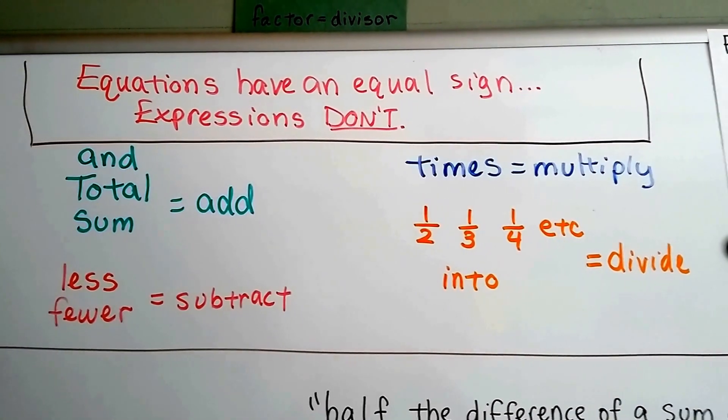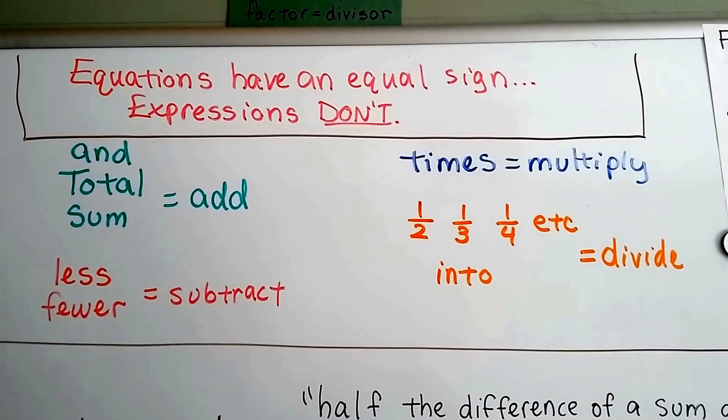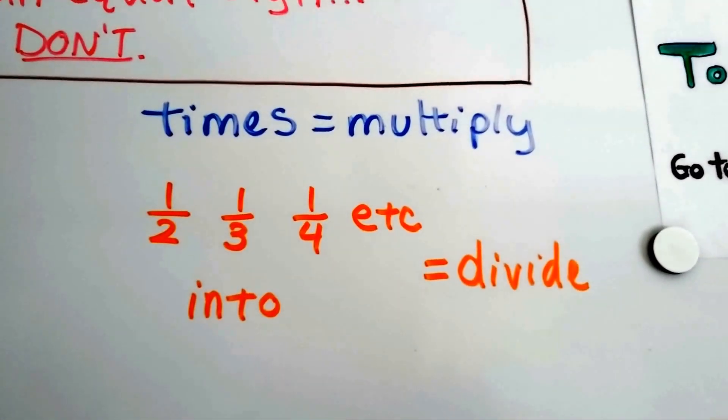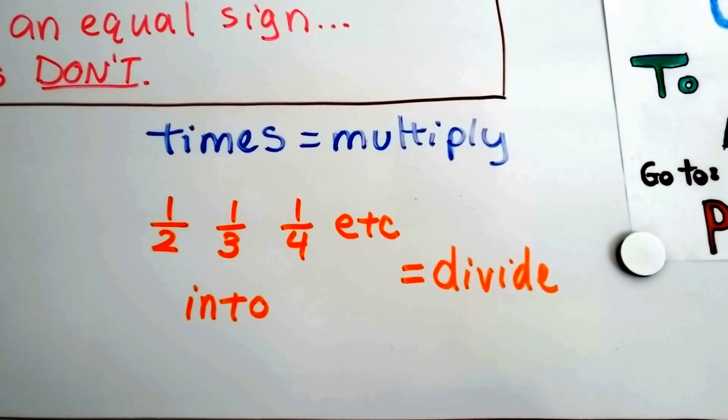We've done some easier ones like the words and, total, and sum mean to add. Less or fewer means to subtract. Times means to multiply. And when you see half, a third, a fourth, or the words into, we know it means to divide.